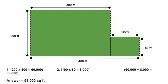You should have noticed that the rectangular section on the left is 300 feet by 200 feet, which comes out to 60,000 square feet when you multiply those two numbers. The smaller rectangle on the right is 100 feet by 80 feet. And when you multiply those two numbers, you get 8,000 square feet.